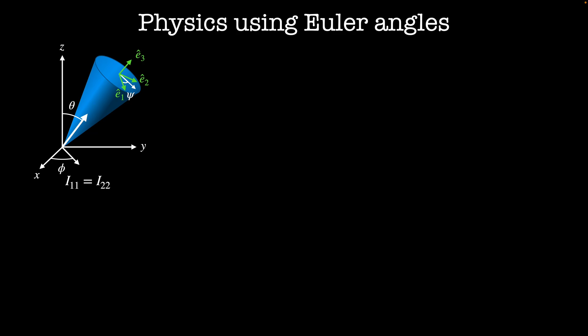Rigid bodies can generally have three independent principal moments, but let's consider a special case that's symmetric. Let's say that I11 equals I22. That means that E1 and E2 are any pair of orthogonal axes that are mutually orthogonal to the third principal axis, E3. In this setup, psi is the angle the body spins around the E3 axis, theta is the angle it makes with the z-direction, and phi is the angle around the z-direction. First, let's take a look at how the physics works when we take the Euler angles to be our generalized coordinates.